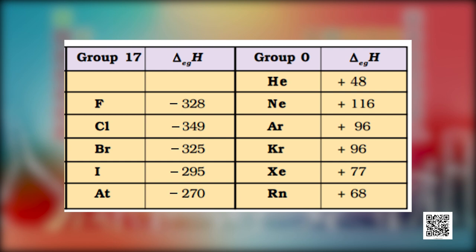For example, group 17 elements — the halogens — have very high negative electron gain enthalpies because they can attain stable noble gas electronic configurations by gaining an electron. On the other hand, noble gases have large positive electron gain enthalpies because the electron has to enter the next higher principal quantum level, leading to a very unstable electronic configuration. Electron gain enthalpies have large negative values towards the upper right of the periodic table, preceding the noble gases.